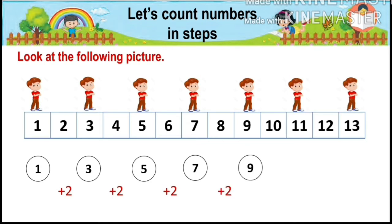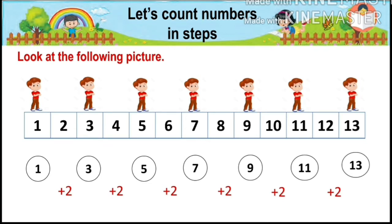Two steps forward again we get nine, then again two steps forward we get eleven, again two steps forward we get thirteen. Starting from number one, we get the numbers in steps of two — that is, we get the numbers: one, three, five, seven, nine, eleven, thirteen. All these numbers are in steps of two.